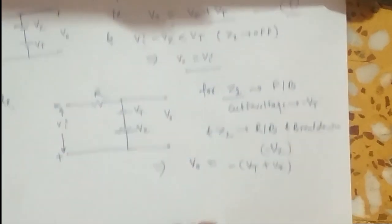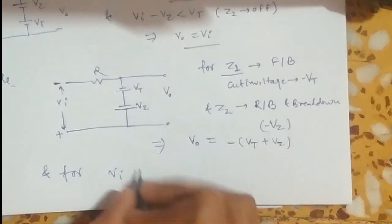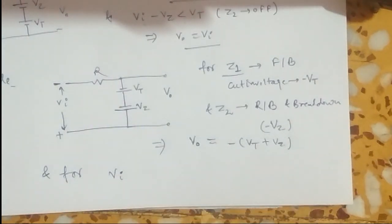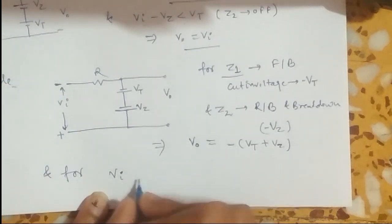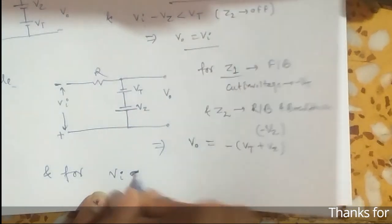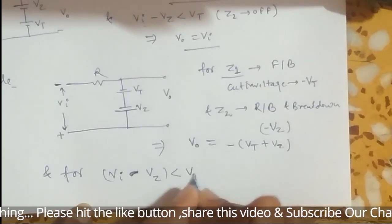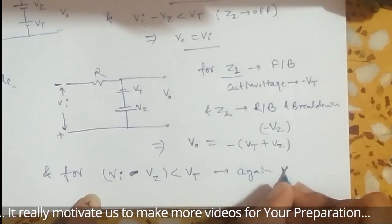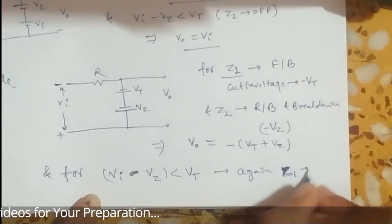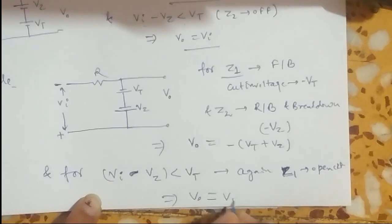For VI — replacing in the negative cycle — if VI minus VZ is less than VT, then Z1 will be open. This implies that V0 equals VI.